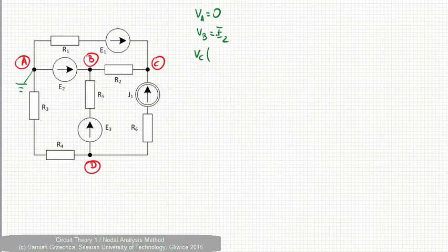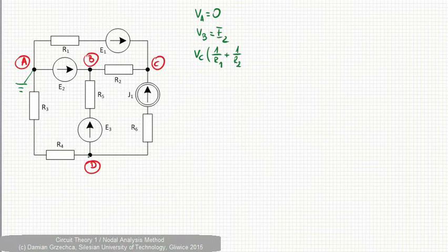so the conductance is the reciprocal of R1. Between node C and B we have only one single resistor, the conductance is 1 over R2. And between node C and node D, we have resistance R6 and current source. The ideal current source has its internal resistance of infinity. So if we add infinity to R6, it's still infinity. And 1 over infinity is zero.